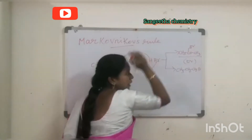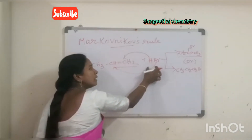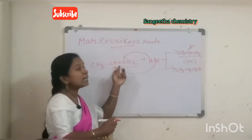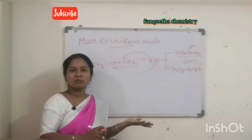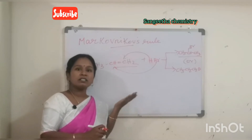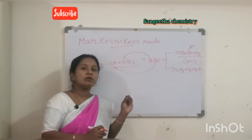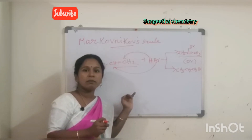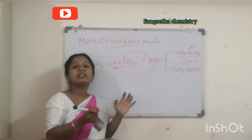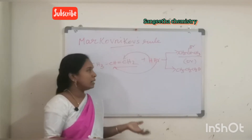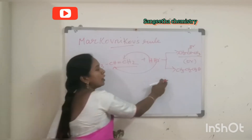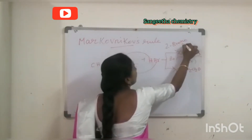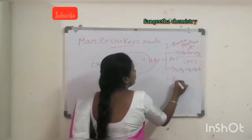According to Markovnikov's Rule, when an unsymmetrical alkene reacts with an unsymmetrical reagent, the hydrogen of the reagent bonds with the double-bond-containing carbon which contains the highest number of hydrogen atoms. So the major product — about 80% — is 2-bromopropane, and the remaining is 1-bromopropane.